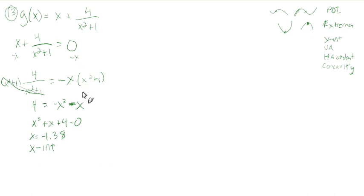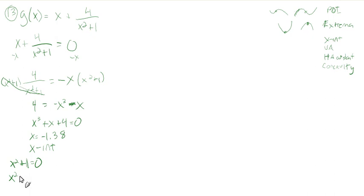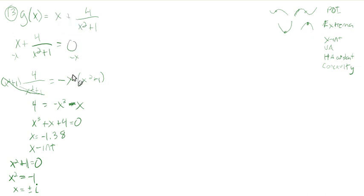What would cause this function to be undefined? The denominator being zero: x²+1 = 0, so x² = -1. That gives ±i — imaginary numbers. We want real numbers, so there are no vertical asymptotes and no place where this function is undefined.